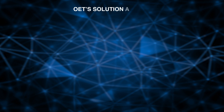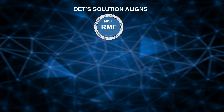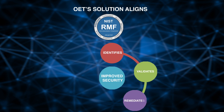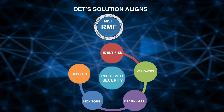OET's solution aligns to the NIST risk management framework and does the following: identifies everything in your IT environment and analyzes all the security controls and configurations; validates the compliance of all security controls; remediates any controls not in compliance with the risk management framework; monitors the environment continuously to ensure you stay in compliance; and provides real-time dashboards, role-based monitoring, and automatically generates reports to include your system security plan and reports on any device or security control.